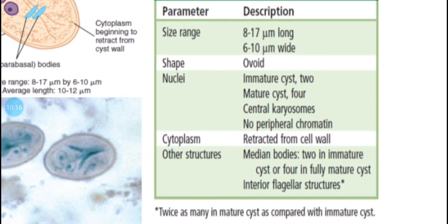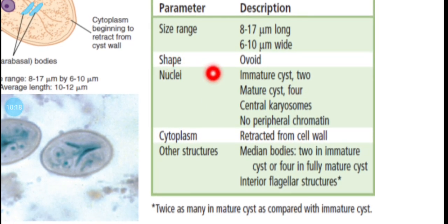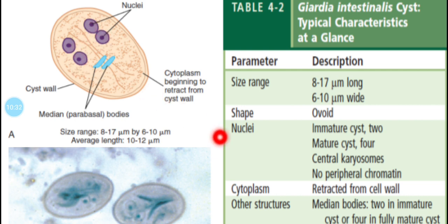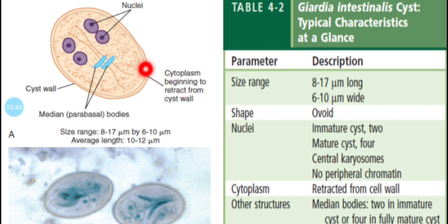The cyst of Giardia: it has an oval shape. Nuclei count: immature cyst has 2 nuclei; mature cyst has 4 nuclei. Each nucleus has a central karyosome. There is no peripheral chromatin — unlike Entamoeba histolytica which has peripheral chromatin.